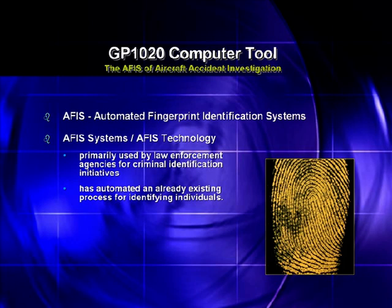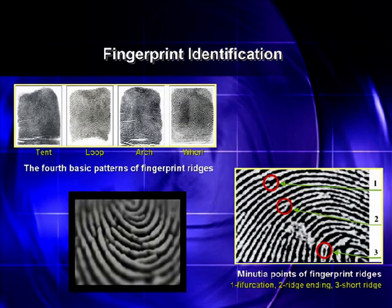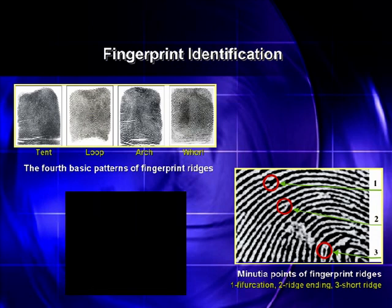The GP1020 computer tool and its features resemble the well-known Automated Fingerprint Identification System, AFIS. Therefore, GP1020 is often called by the author the AFIS of Aircraft Accident Investigation. A brief review of AFIS systems is given in order to provide an insight into these systems and the features they have in common with the GP1020 tool. AFIS systems are primarily used by law enforcement agencies for criminal identification initiatives, mainly for identifying a person suspected of committing a crime or linking a suspect to other unsolved crimes. AFIS technology has automated an already existing process for identifying individuals.